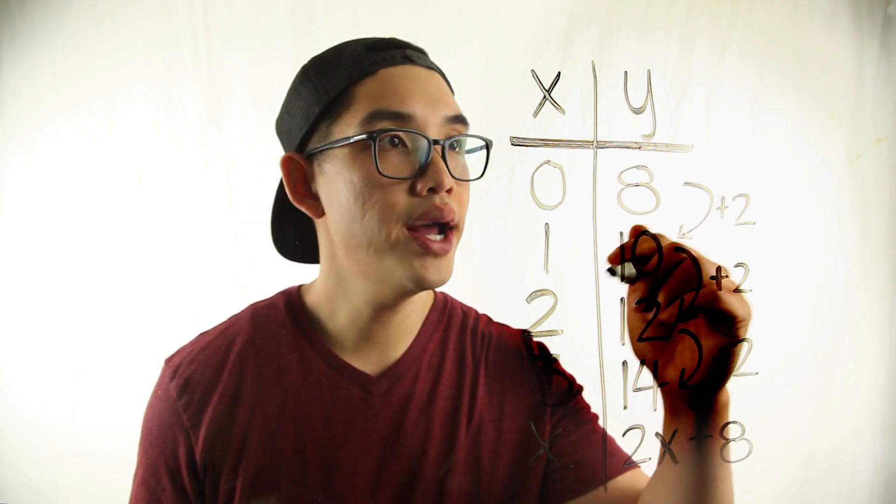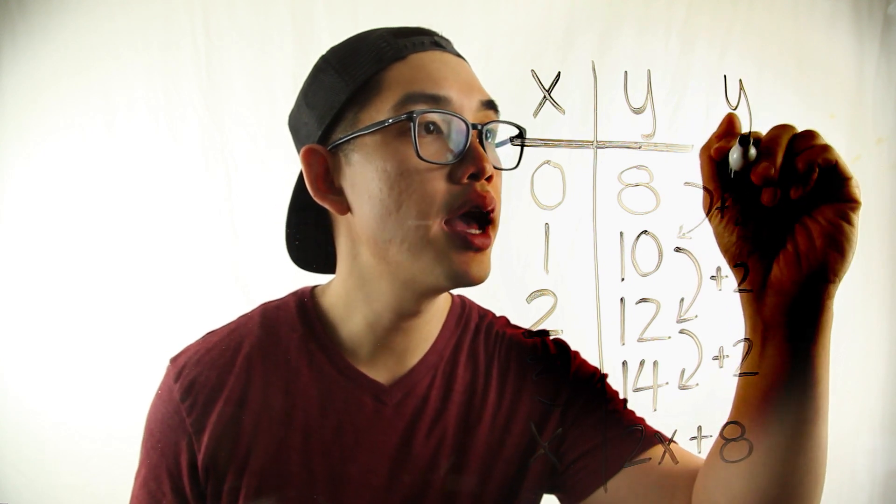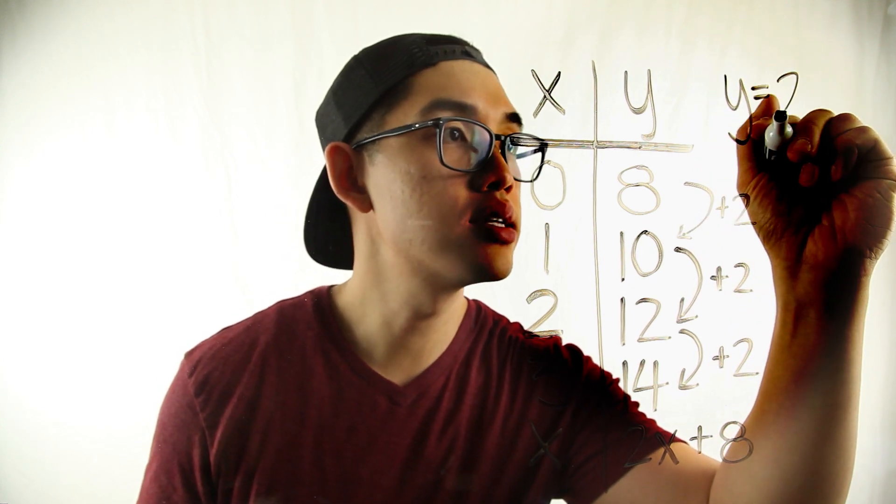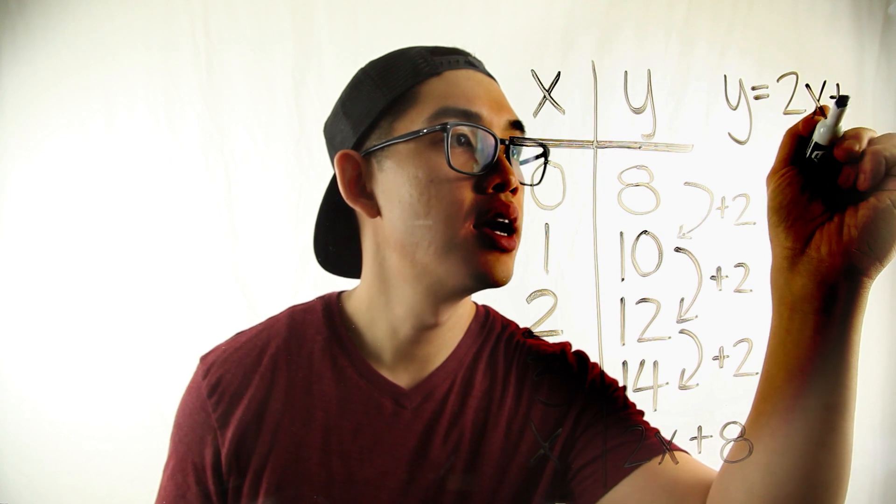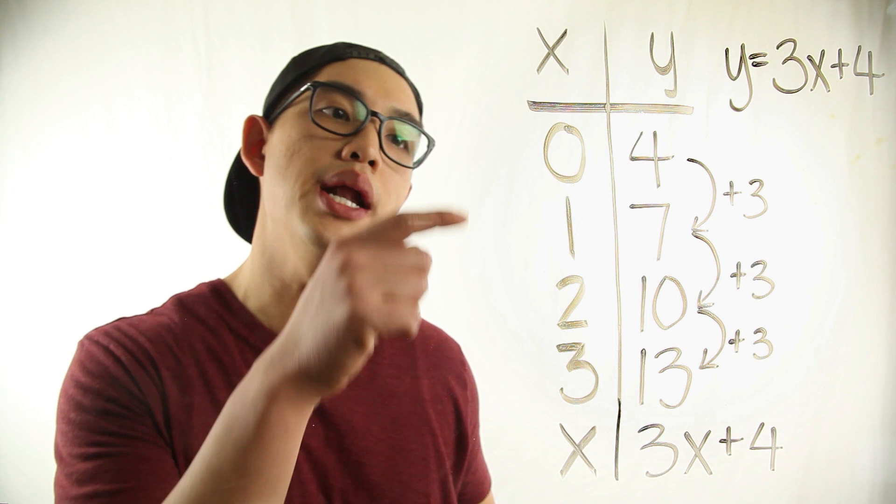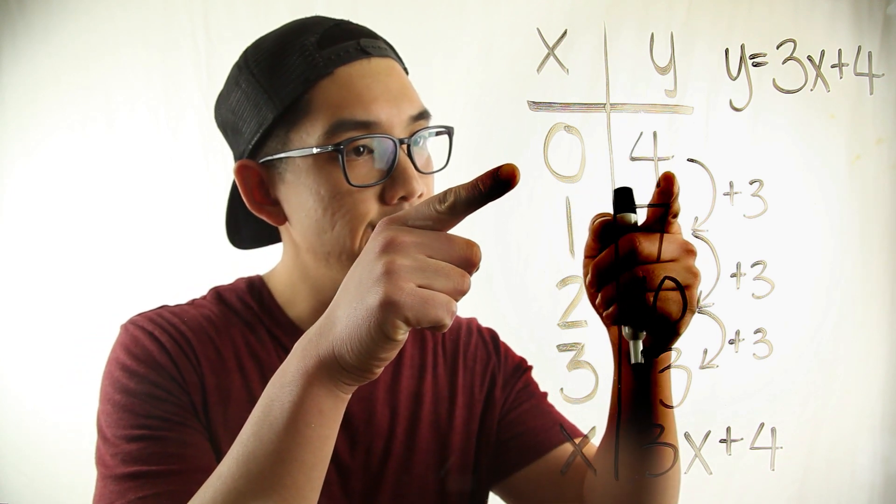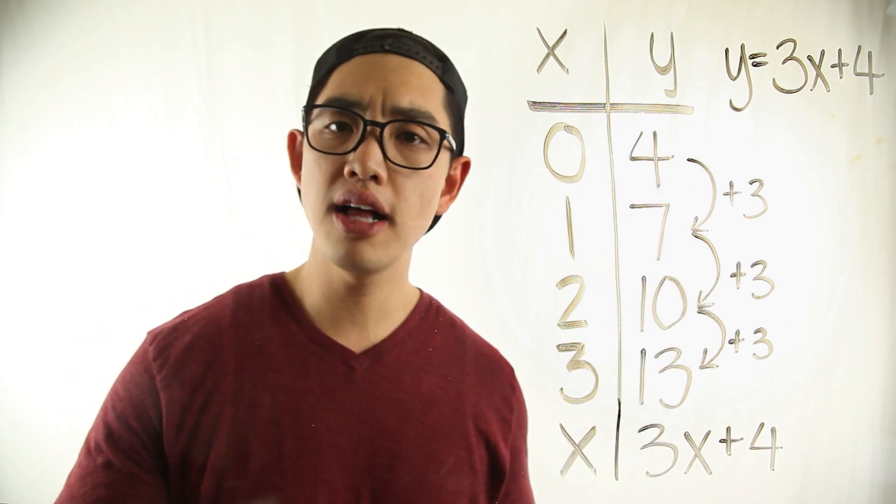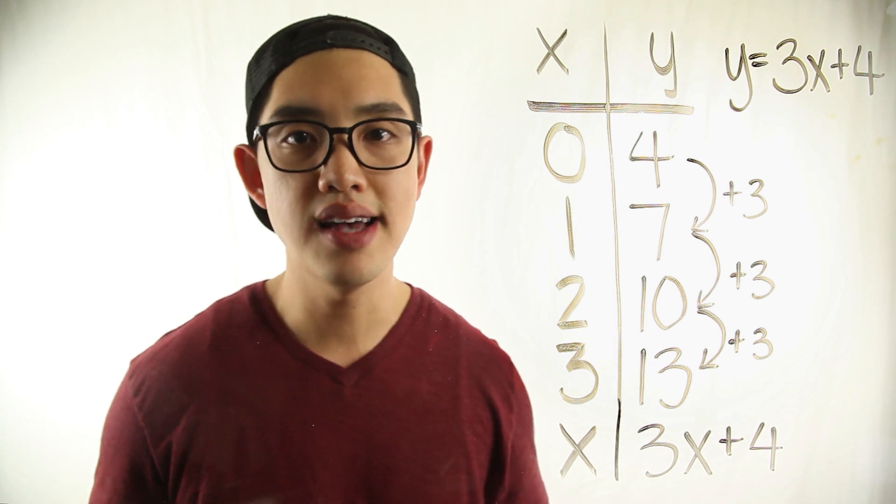So what we're gonna write as our function rule is y equals two x plus eight. So to wrap things up, a function rule is basically a rule that shows you how an input turns into an output. I'm Mr. Chen, thanks for watching Glassboard Learning and I'll see you guys next time.